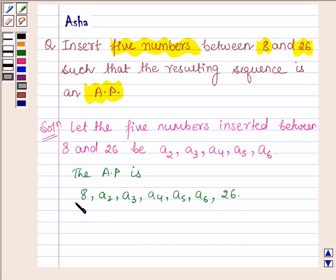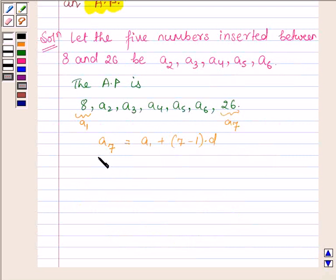So clearly this is the first term and this is the 7th term of the AP. Now the 7th term of the AP is A1 plus 7 minus 1 into D. The 7th term is 26. First term is 8 plus 6D. So this implies that 26 minus 8 is equal to 6D, or 18 is equal to 6D. So this implies D is equal to 3.